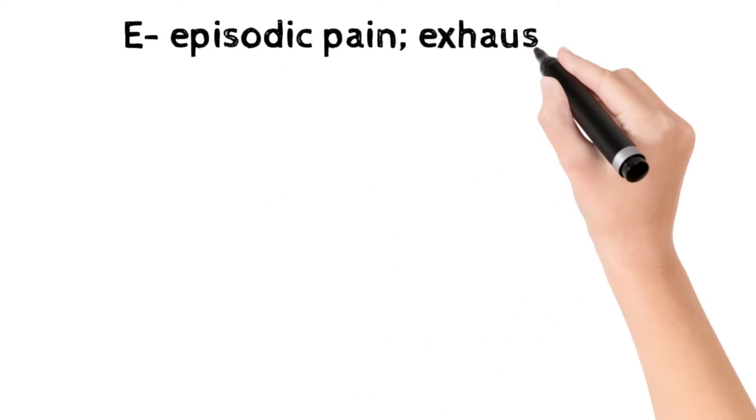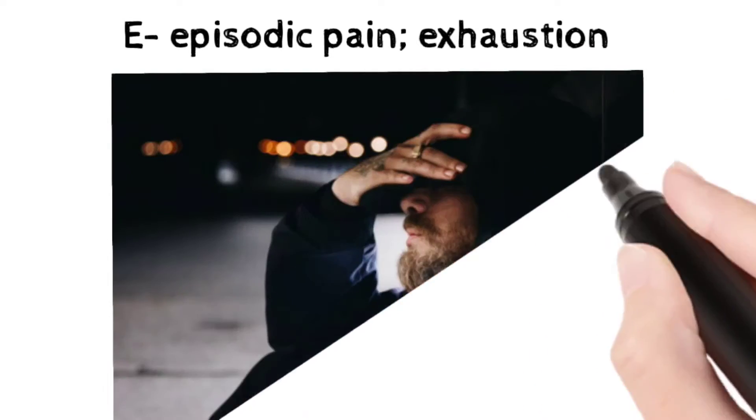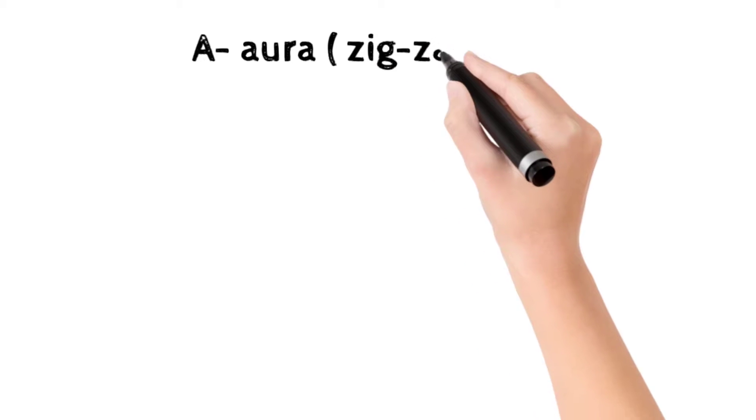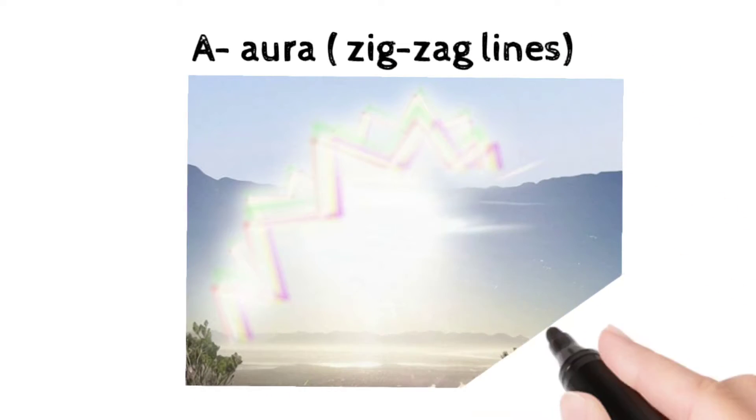E stands for episodic pain. E also stands for exhaustion. A stands for aura, that is zigzag lines.